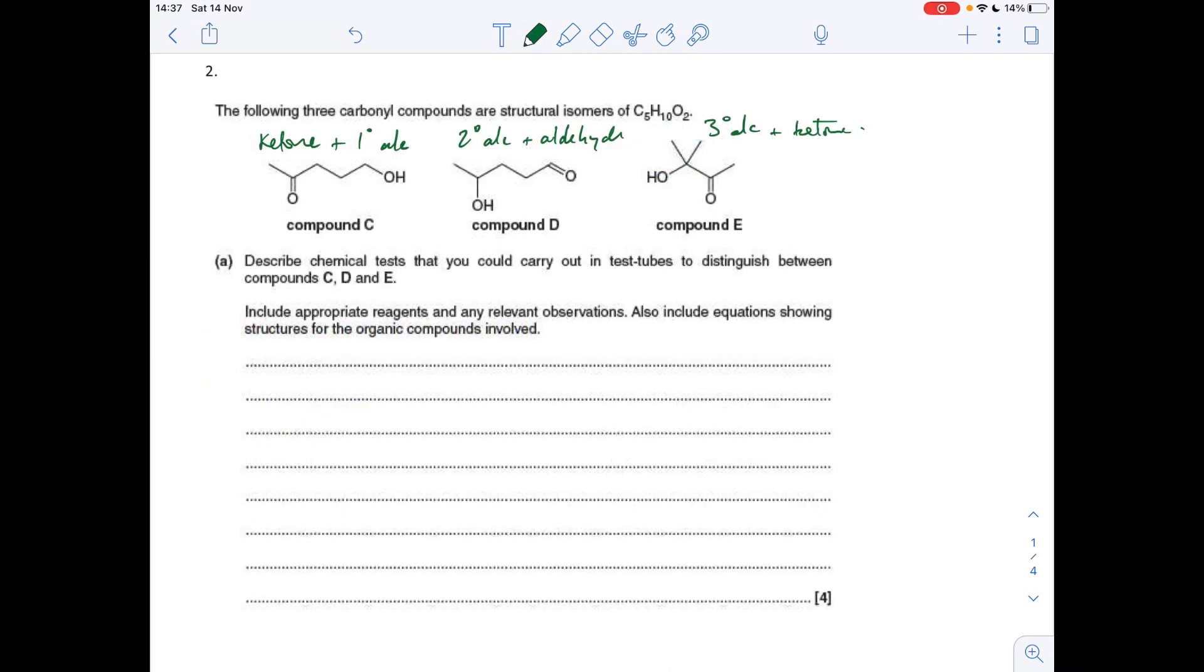Question two: we've got to come up with some chemical tests that would be able to identify and distinguish between C, D, and E. You can see I've written up the functional groups that they all contain. C contains a ketone and a primary alcohol group, D secondary alcohol and aldehyde, and E tertiary alcohol and ketone.